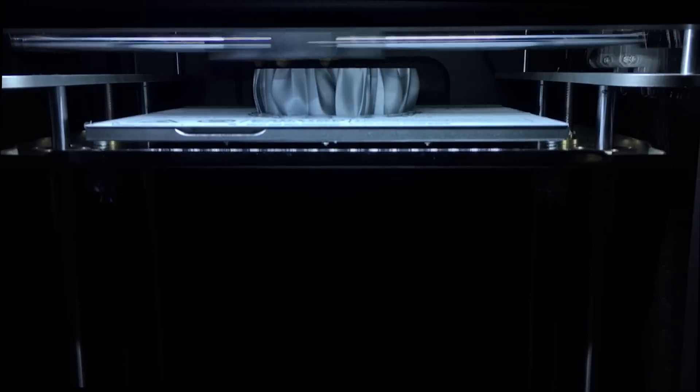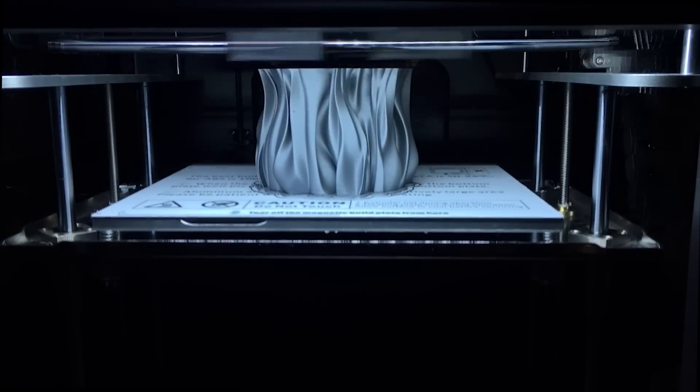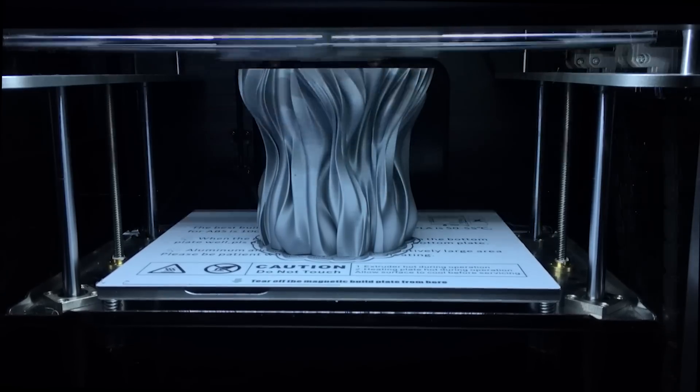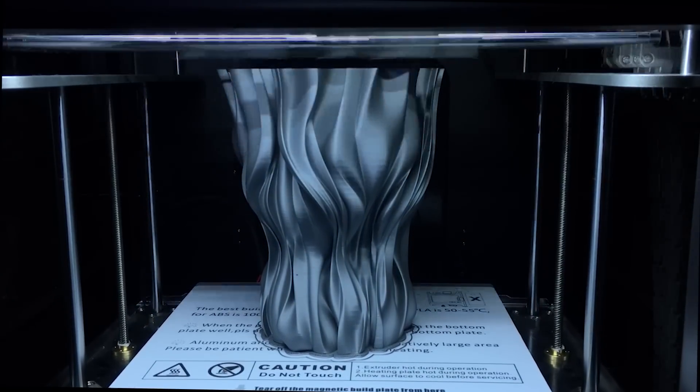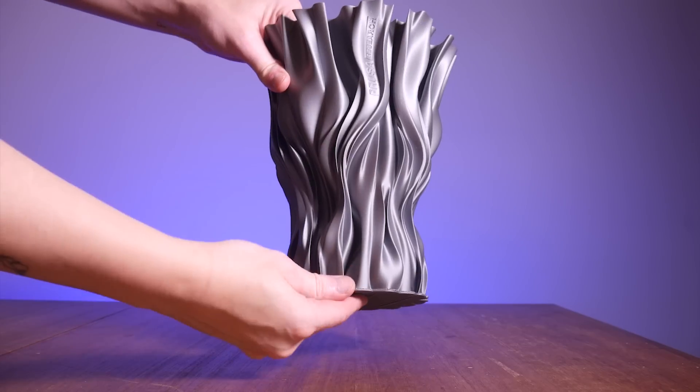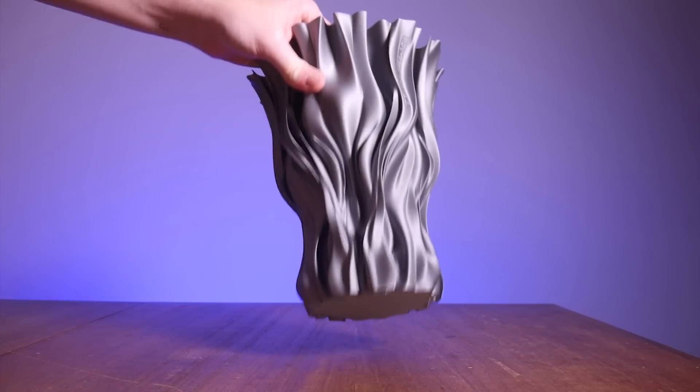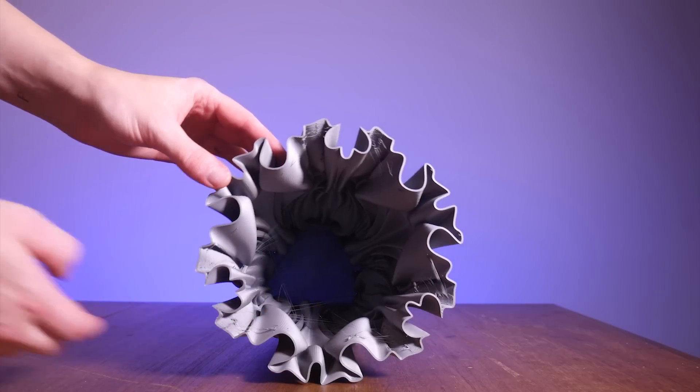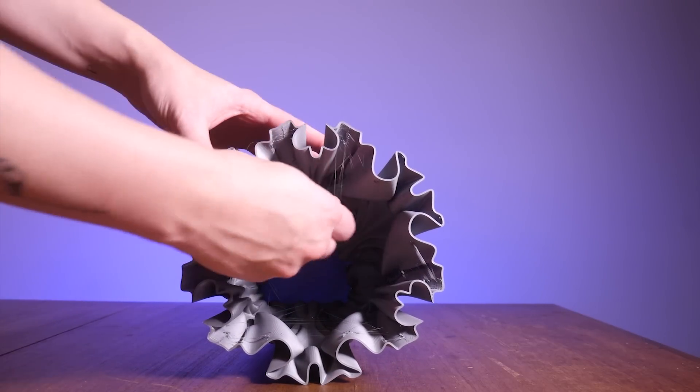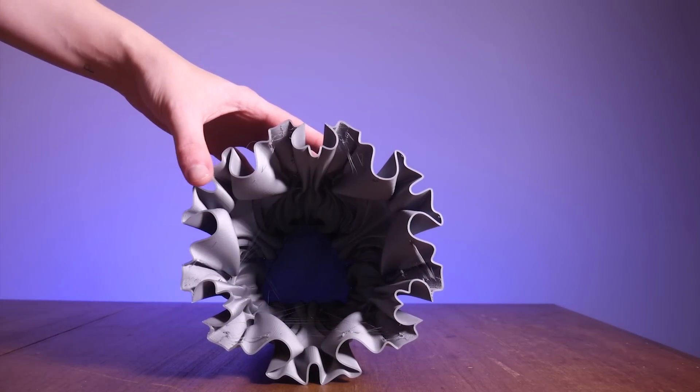I then printed this large fluid vase from Prusa. Again, I managed to achieve great surface finish, but after some minor tweaking to my slicer settings, I was still getting some retraction issues in the form of stringing.